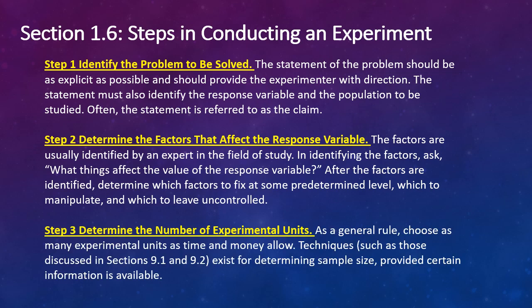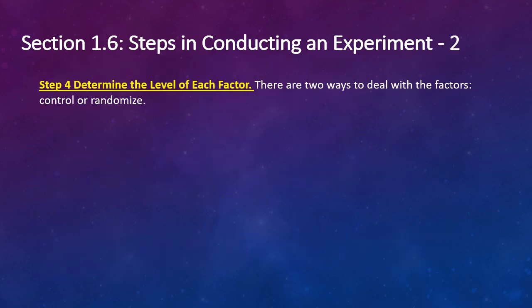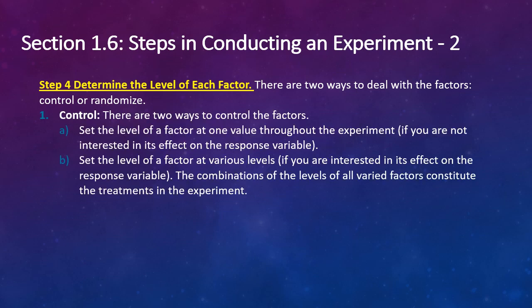Step three, determine the number of experimental units. As a general rule, choose as many experimental units as time and money allow. Step four, determine the level of each factor. There are two ways to deal with the factors, which is to either control it or to randomize it. Set the level of a factor at one value throughout the experiment if you're not interested in its effect on the response variable. Set the level of a factor at various levels if you're interested in its effect on the response variable. The combinations of the levels of all the varied factors constitute the treatments in the experiment.